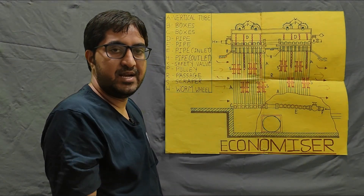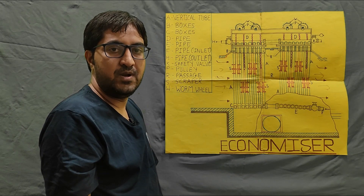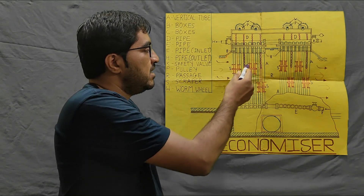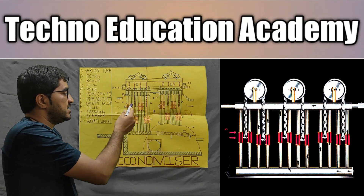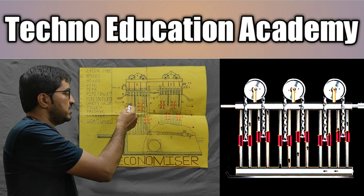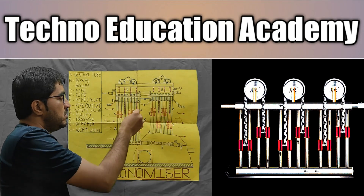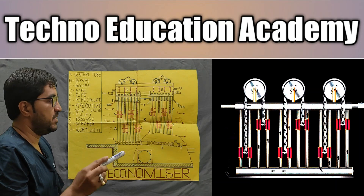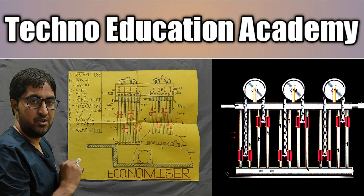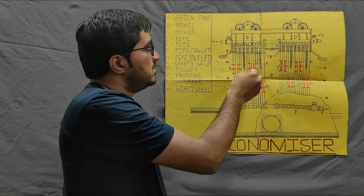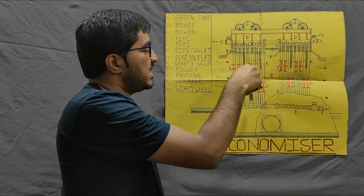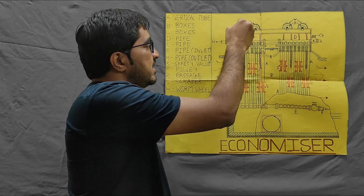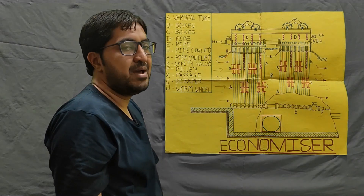Sometimes in the flue gases there are carbon particles, which precipitate on the surface of the tubes. Since carbon is an insulator, it reduces the heat transfer rate of the tubes. To address this, we use a scraper mechanism. The scraper slides up and down and removes the carbon particles from the tubes, so we can achieve the maximum heat transfer rate between the flue gases and the water tubes. The scraper is connected with a chain, and the chain is connected with the worm wheel, which is operated by a motor.